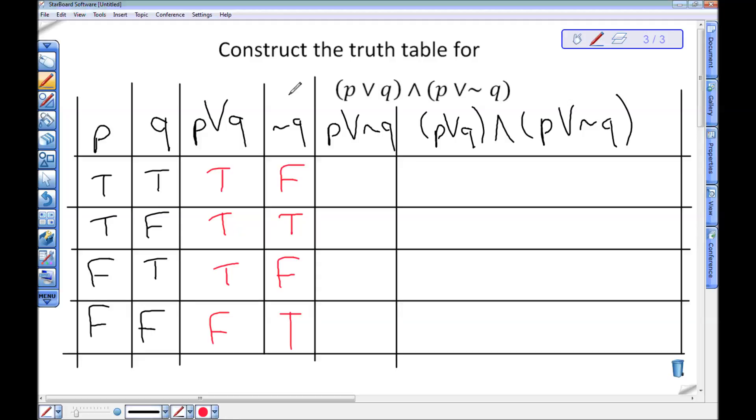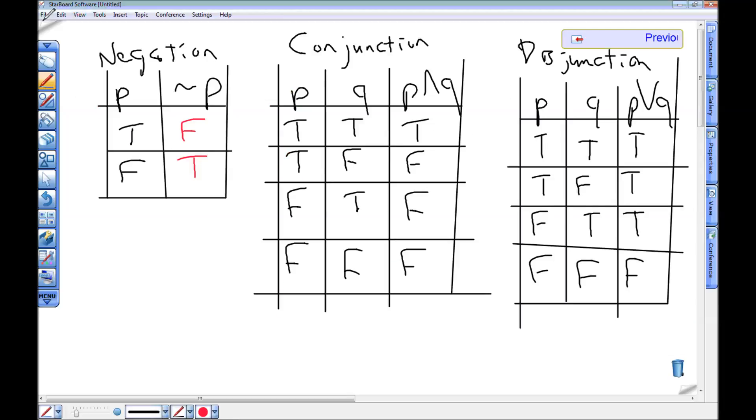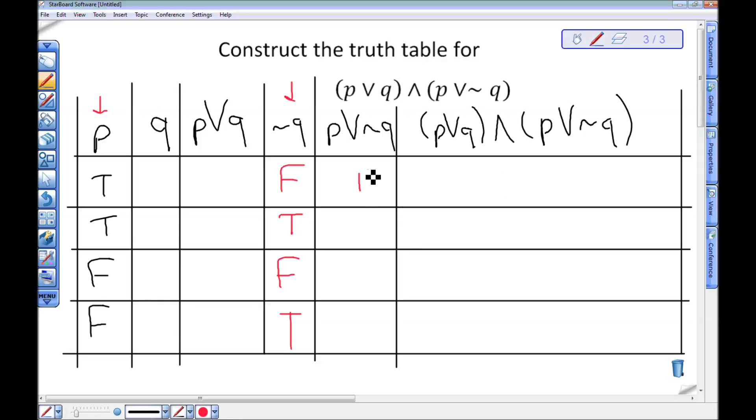Now the next column I want is P or not Q. So you want to ignore both of these columns and just look at this column for P and this column for not Q. So I have in those columns true or false. I can always refer back to my table. True or false is true. So I want to put a T right here.